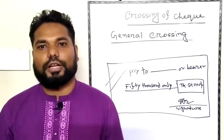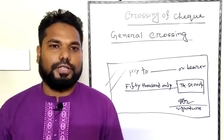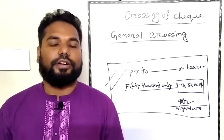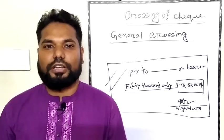There are four types of crossings. Number one is general crossing, number two is special crossing, number three is account payee and restrictive crossing, and number four is not negotiable crossing.